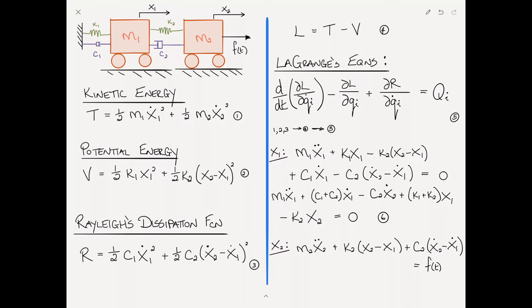That equals f of t. Rewriting: m2 x2 double dot minus c2 x1 dot plus c2 x2 dot minus k2 x1 plus k2 x2 equals f of t. I'll call that equation 7.